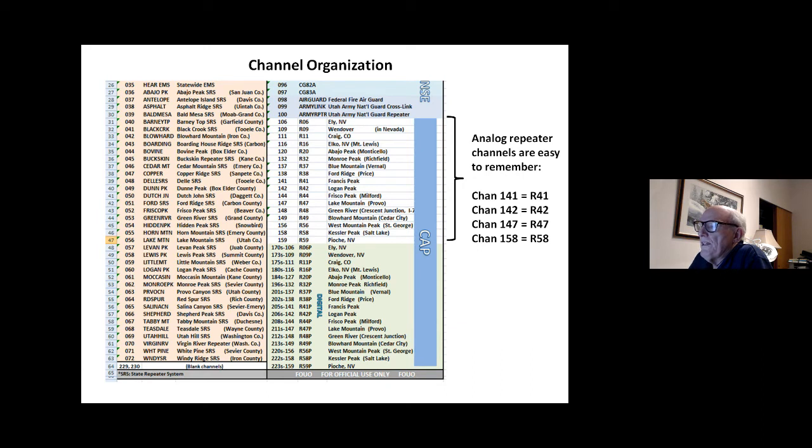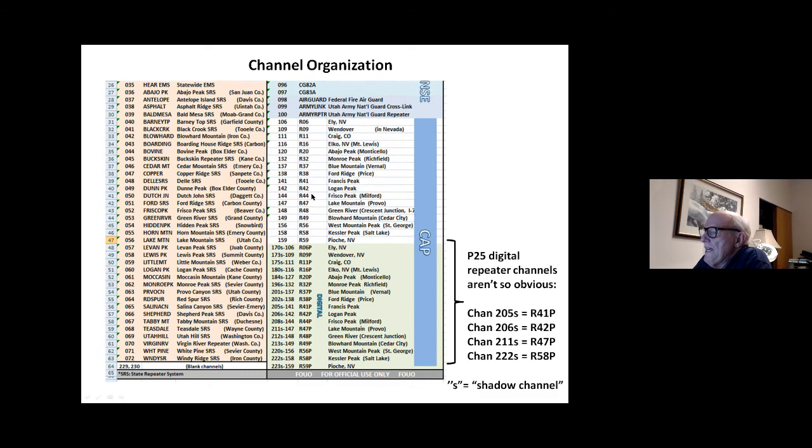One of those that we use, which is actually administrated by Colorado Wing, is R20, which is on Abajo Peak down by Monticello, which provides excellent coverage to southeastern Utah. I was actually able to talk to Lieutenant Colonel Max Kiefer when he was on the ground at Kayenta Airport with the COVID supplies for the Navajo Nation through the linked repeater system in Colorado. But this is the channel lineup for the Utah Wing repeaters, the channel number and the repeater number.